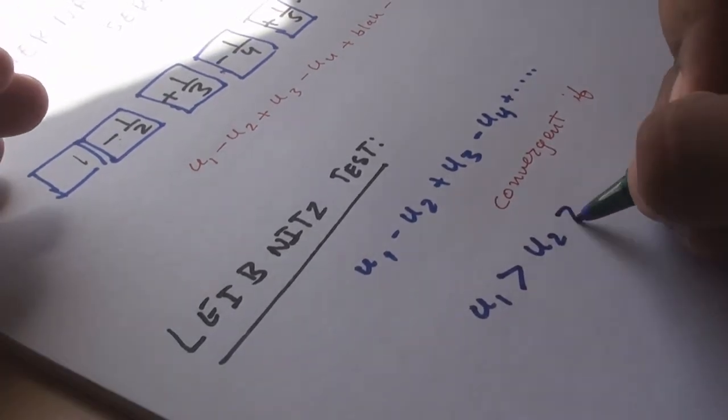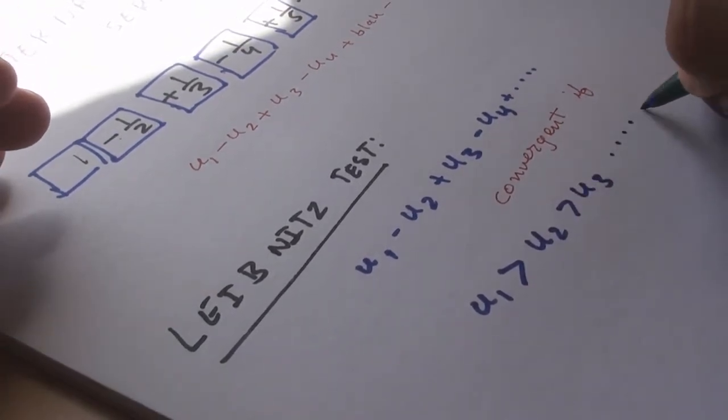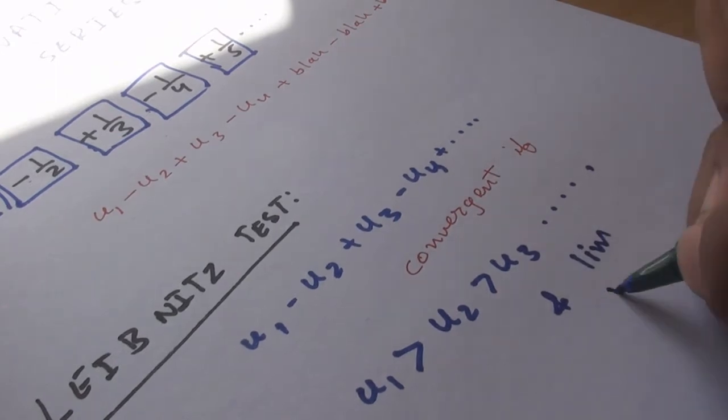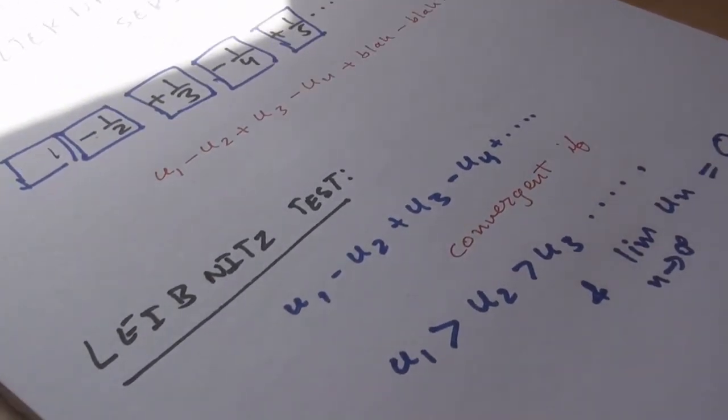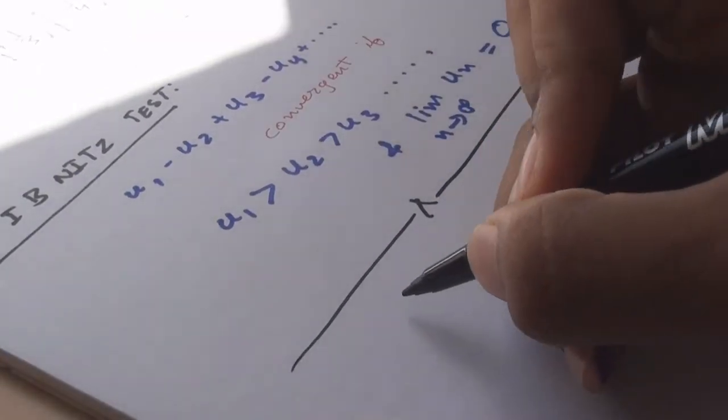That is u1 > u2 > u3 > u4 and so on. Also, the lim(un) as n→∞ equals 0. Finally, we come to the absolute convergence of series.